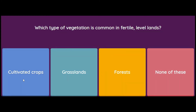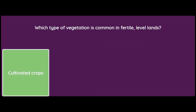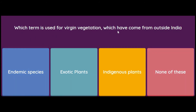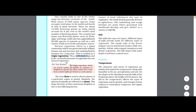Which term is used for virgin vegetation which has come from outside India — endemic species, exotic plants, indigenous plants, or none of these? The virgin vegetation which are purely Indian are known as endemic or indigenous species, but those which have come from outside India are termed as exotic plants.